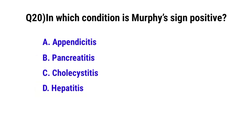Question No. 20. In which condition is Murphy's sign positive? The correct option is C: Cholecystitis.